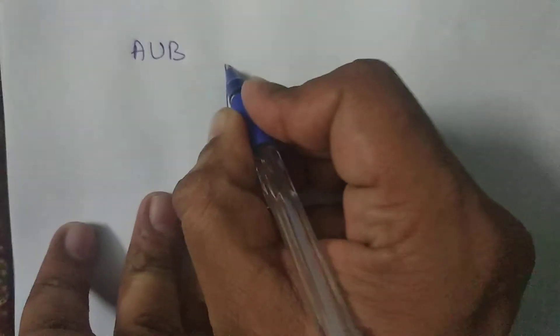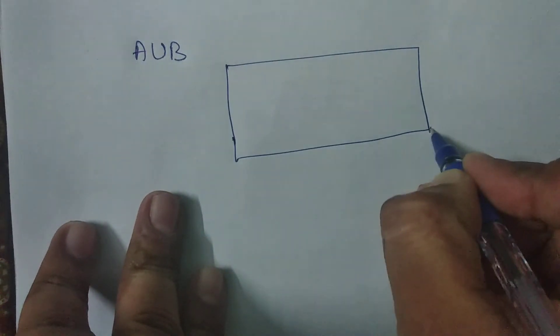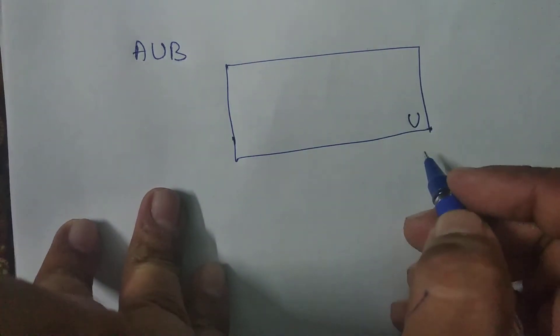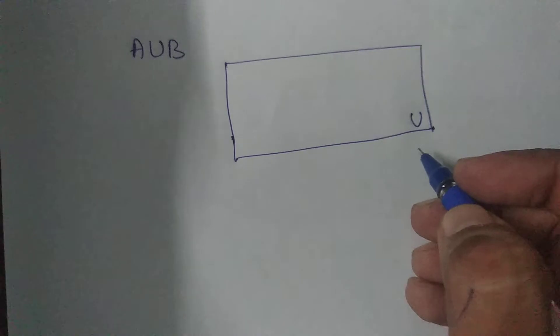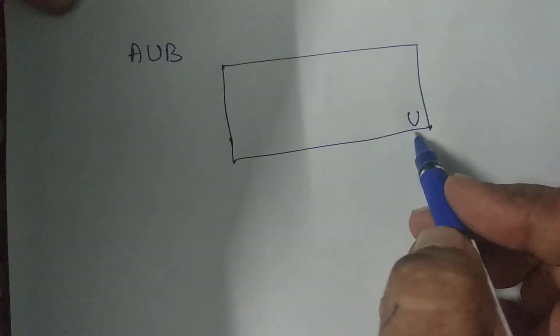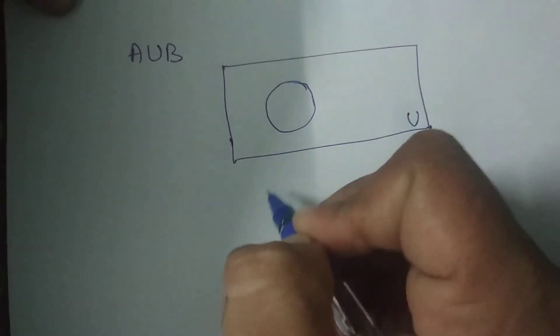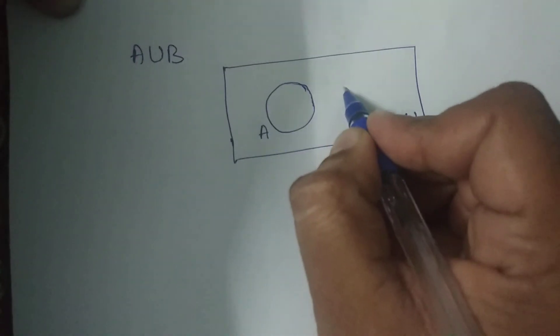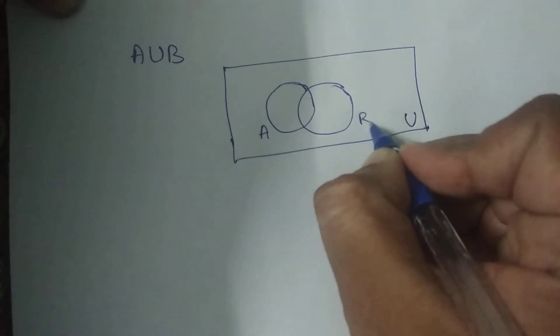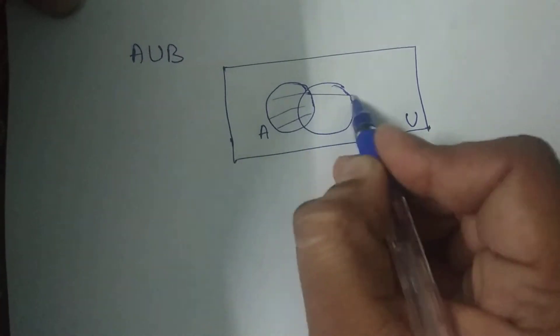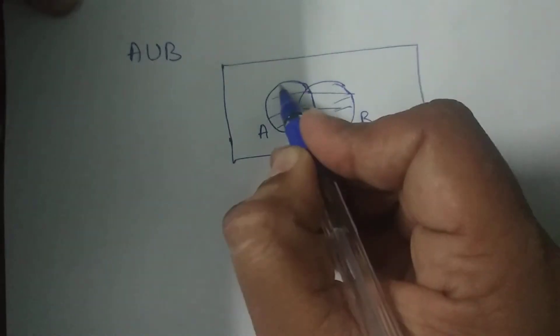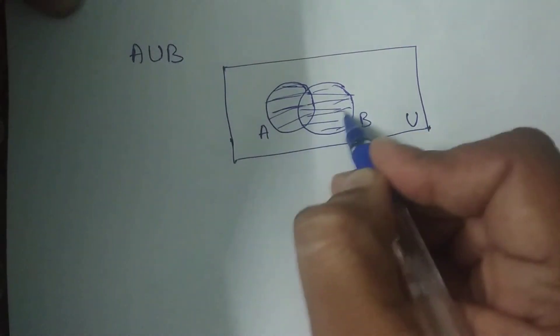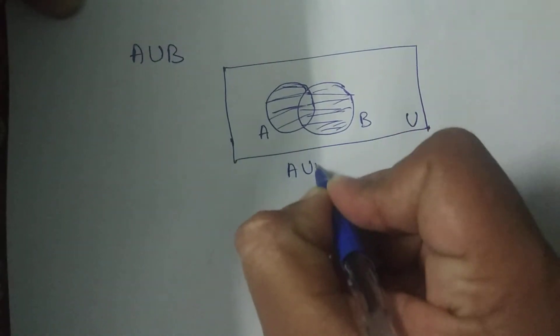Now suppose there are two sets A and B and I need to represent A union B using a Venn diagram. So again I will draw a rectangle, and this rectangular region represents the universal set. Here I have drawn two overlapping circles — this circular area represents set A and this circular area represents set B. This shaded area represents A union B.